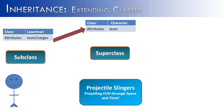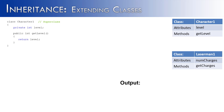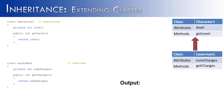Now let's see how this works in actual Java code. We'll start with the Character class, called character1. It has a level attribute and a getter method called getLevel, which returns the level of the current character. character1 is our superclass. Next, the Laser Man class — called laserMan1 — has an instance variable numCharges representing how many laser charges it can shoot, and a getter that returns the number of charges remaining. laserMan1 is our subclass, and we want to create the 'Laser Man is a character' relationship.